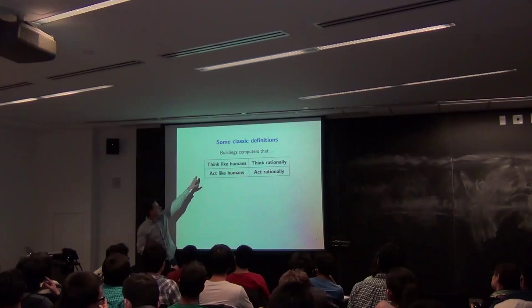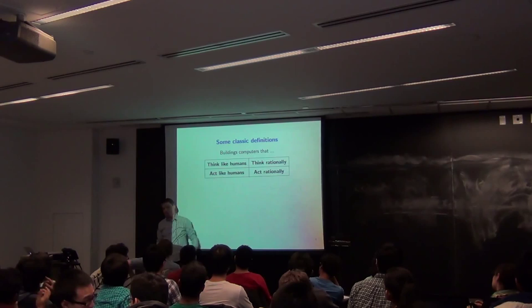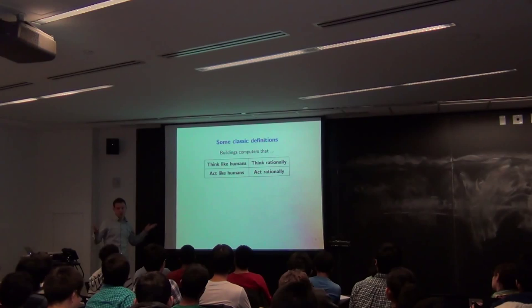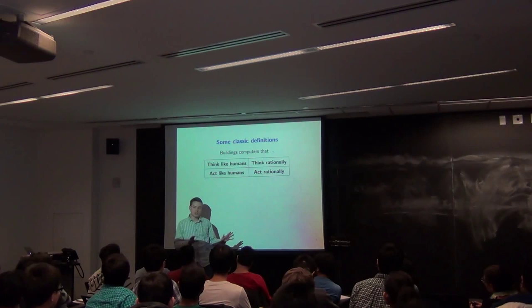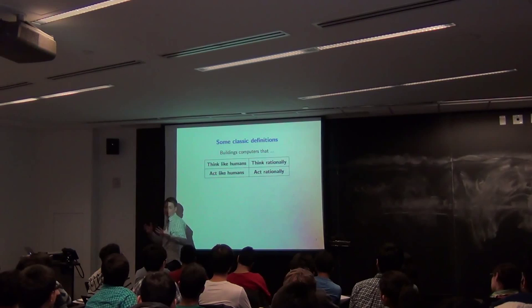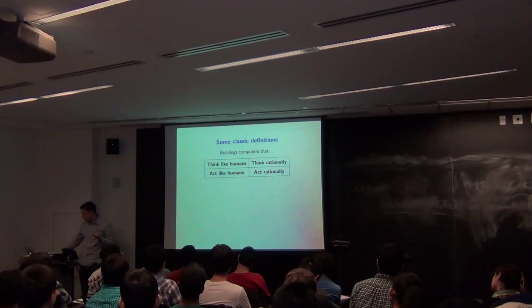AI is about how we make programs that think like humans or think rationally, or act like humans or act rationally. I'm going to jump right in and talk about some of these ideas, where they come from and why they might be useful, even though in this course we're not going to delve into all of them too deeply — we're going to present a broad range of AI topics as a whole.